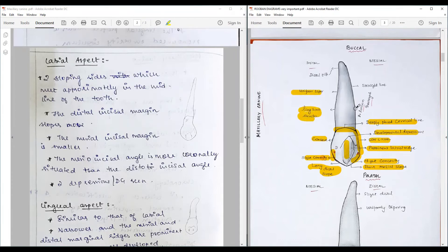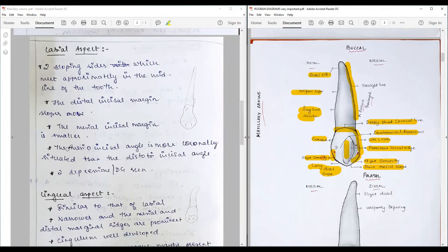The root is long and slender with uniform taper. The mesial outline is straight and at the end we have a distal tilt. The most important point is the mesio-incisal angle. The mesio-incisal angle is more coronally situated than the distal incisal angle.